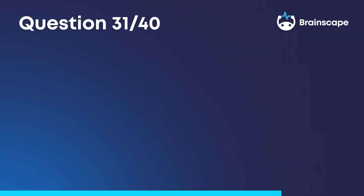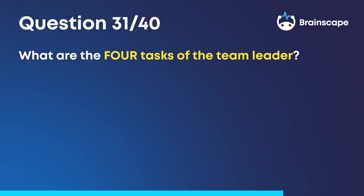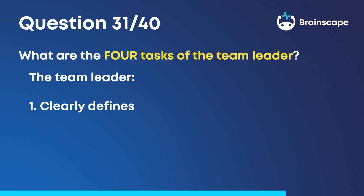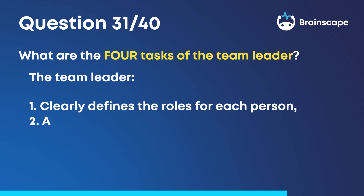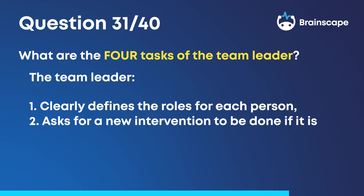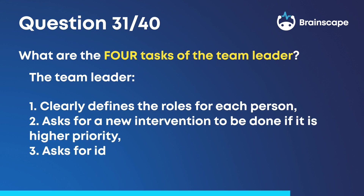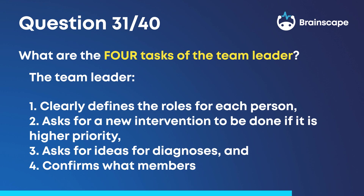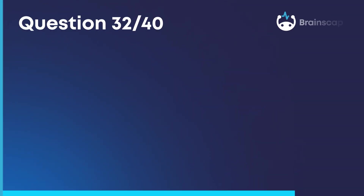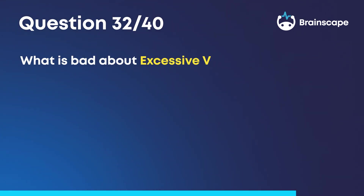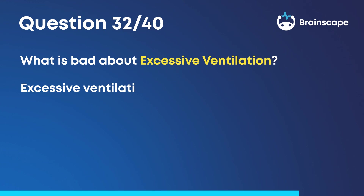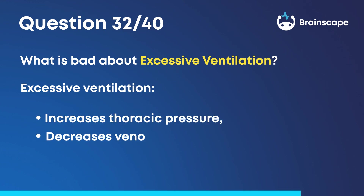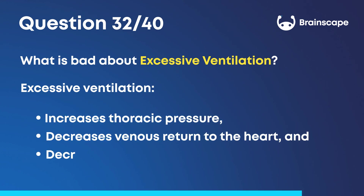Question 31: What are the four tasks of the team leader? The team leader: 1. Clearly defines the roles for each person. 2. Asks for a new intervention to be done if it is higher priority. 3. Asks for ideas for diagnoses. 4. Confirms what members do and is clear about instructions. Question 32: What is bad about excessive ventilation? Excessive ventilation increases thoracic pressure, decreases venous return to the heart, and decreases cardiac output.